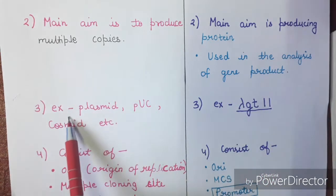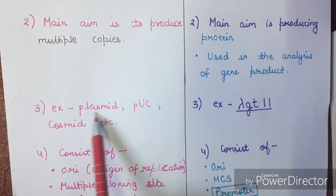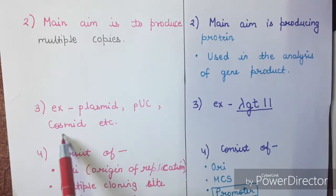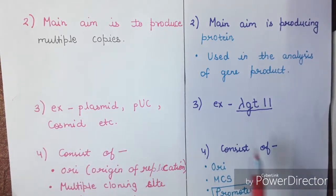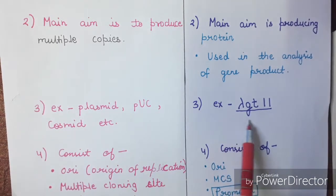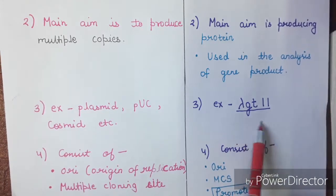Some of the common cloning vectors are plasmid vectors, PUC vectors, and cosmid vectors. An example of an expression vector is lambda GT11.